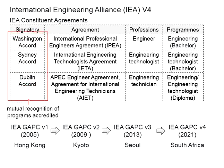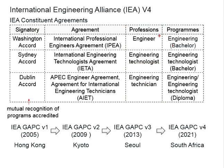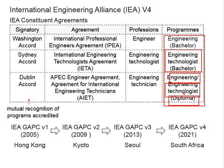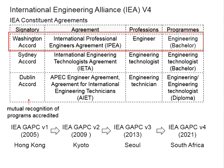The Washington Accord, Sydney Accord, and Dublin Accord are related to the professions of engineers, engineering technologists, and engineering technicians respectively, covering Bachelor's degrees in engineering, Bachelor's degrees in engineering technologies, and Diplomas in engineering or engineering technologies. These accords are agreements of mutual recognition of programs accredited among signatory countries. Our discussion from here onwards will focus mainly on the Washington Accord.